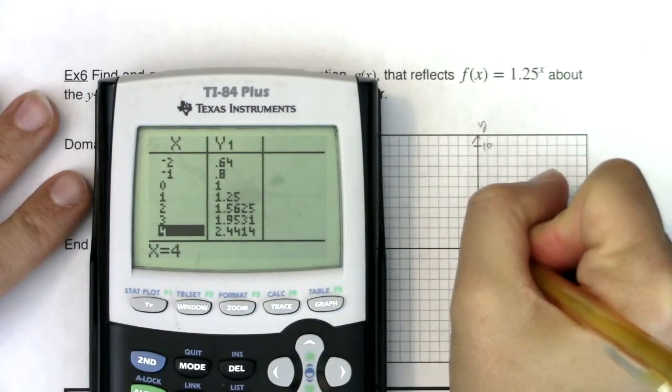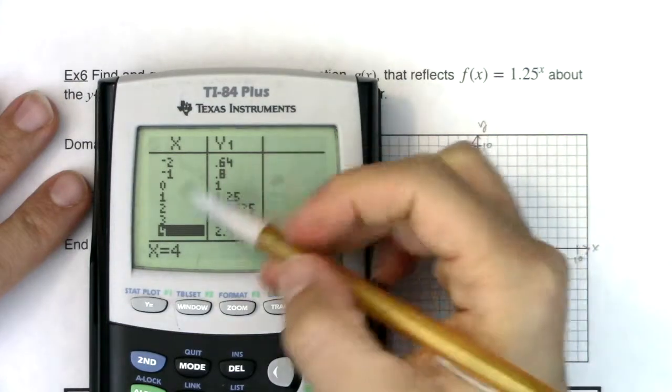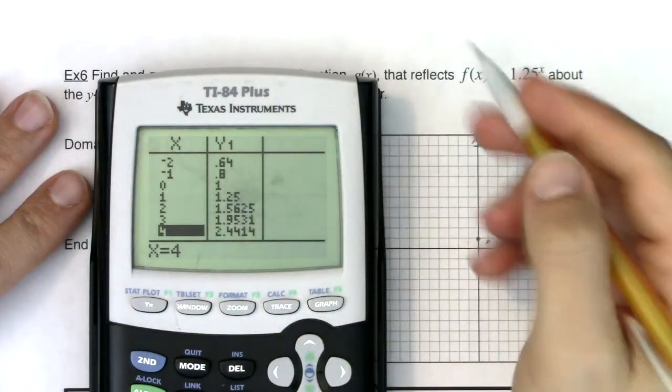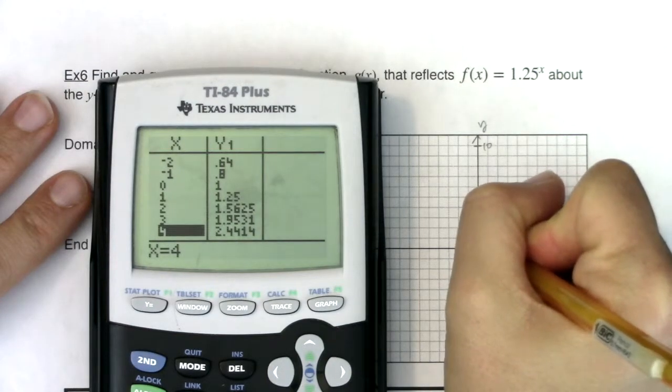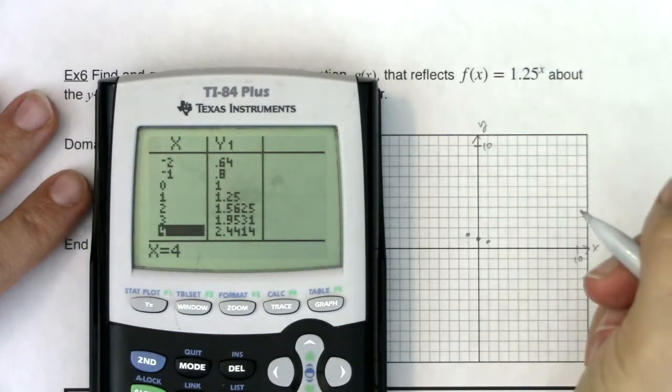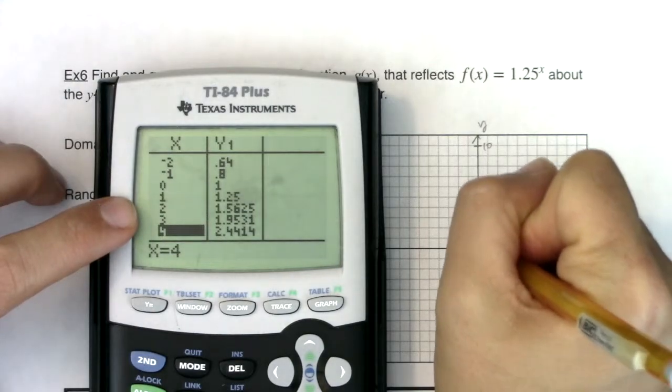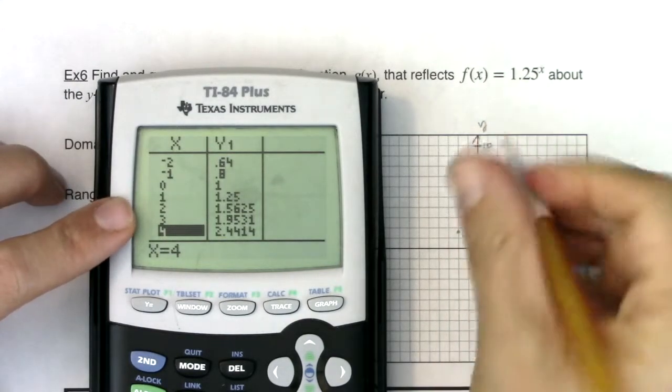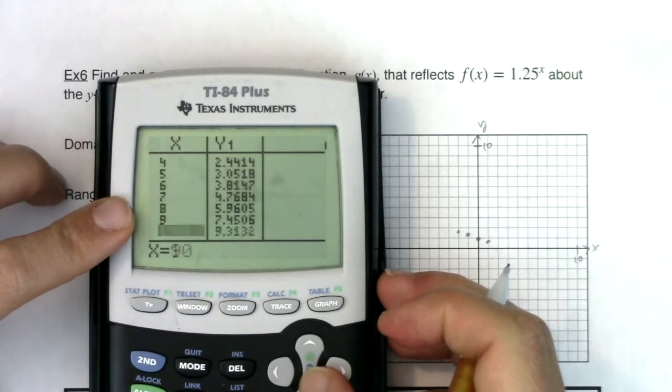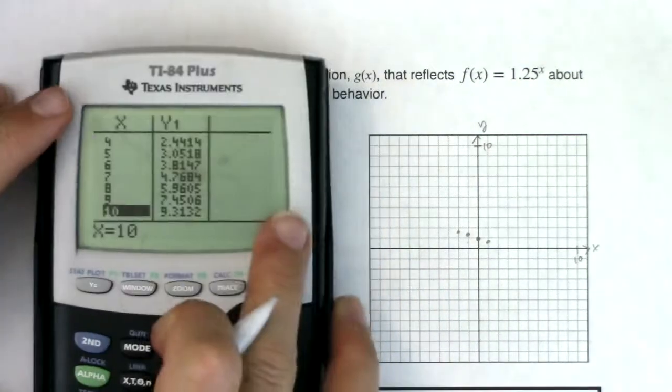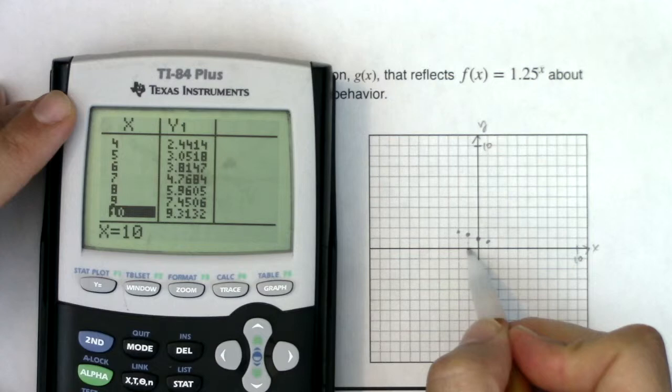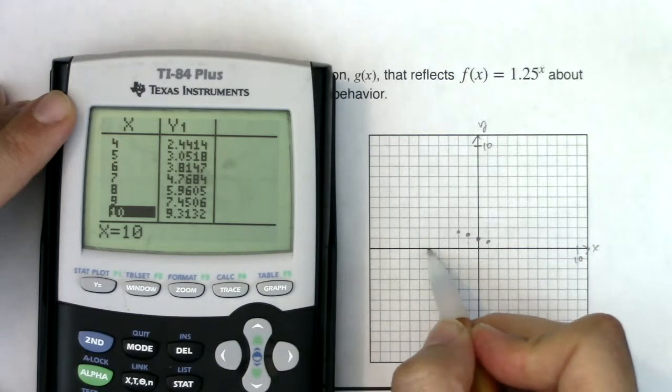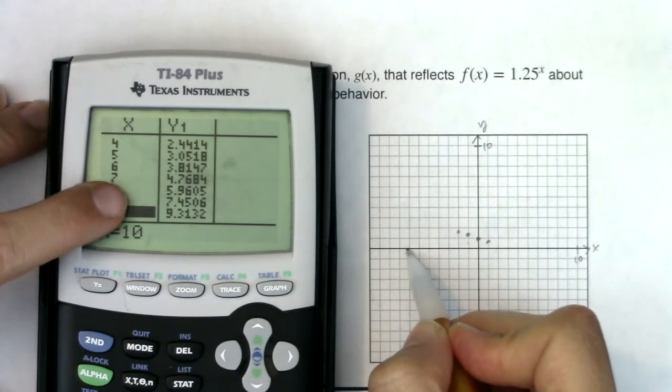Here I was at 0, 1. Well, 0, 1 will reflect to itself. Here I was at 1 and about 1.25. So I was at 1, 1.25. It's going to reflect to negative 1, 1.25. This one's going to reflect to negative 2, 1.5. I'm going to head up a little, get some better numbers. Let me try 7, 4.7. That's going to go to negative 7. So 1, 2, 3, 4, 5, 6, 7.